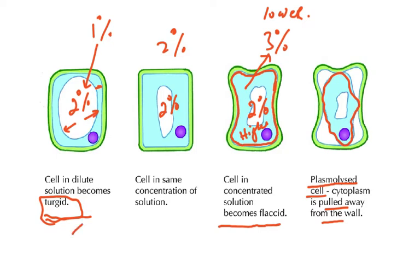So the differences are: turgid when in a dilute solution, flaccid when in the same concentration, and plasmolyzed in a concentrated solution. Water has moved out by osmosis. We don't say the cell shrinks because the cell wall maintains the structure slightly. This is a plant cell, not an animal cell.